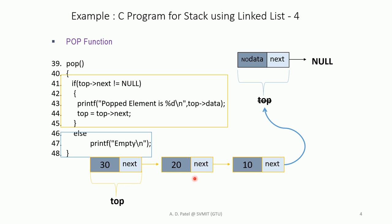So if the user pops again, 20 will be displayed and next will point to 10; pop again and 10 is displayed. After all elements are popped, top has no data and next is pointing to null, so the condition is false and execution goes to the else block, which prints 'stack is empty' and the user cannot pop any more elements.